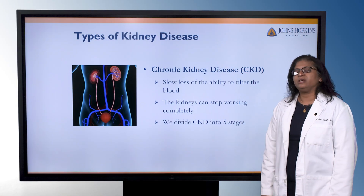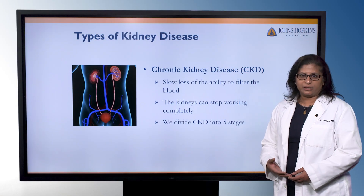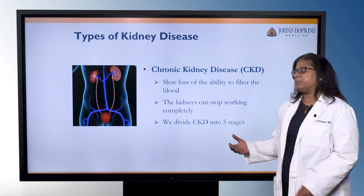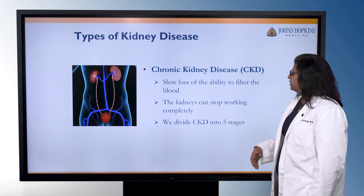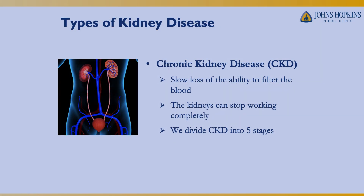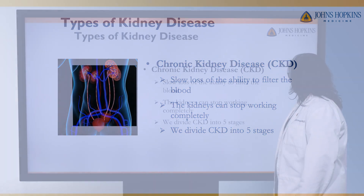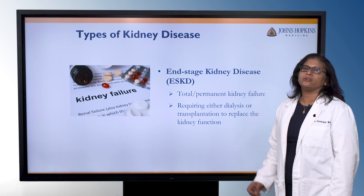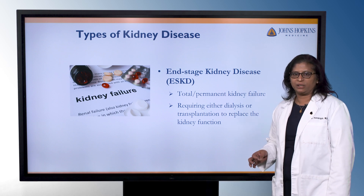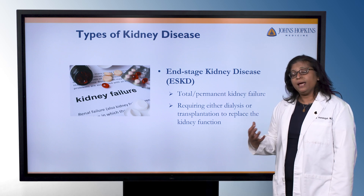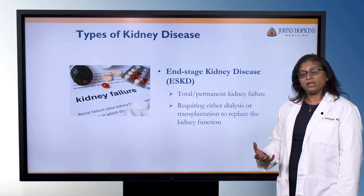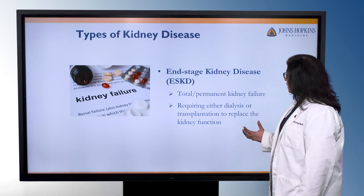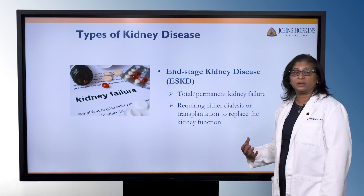Chronic kidney disease is a more slow loss of kidney function that can happen over a period of months to years. The kidneys can eventually stop working with chronic kidney disease, and we divide it into five different stages. End-stage kidney disease is when we have total or permanent loss of kidney function, and in those cases we have to replace that kidney function either with dialysis or transplantation.